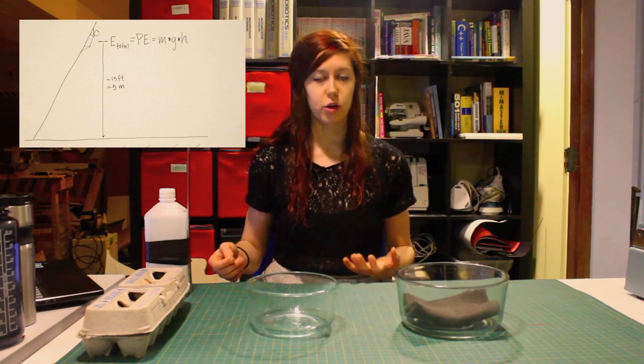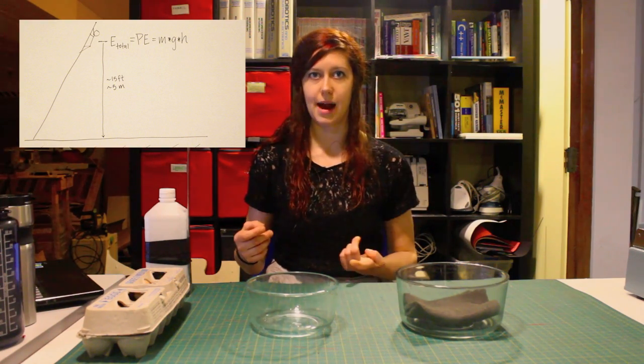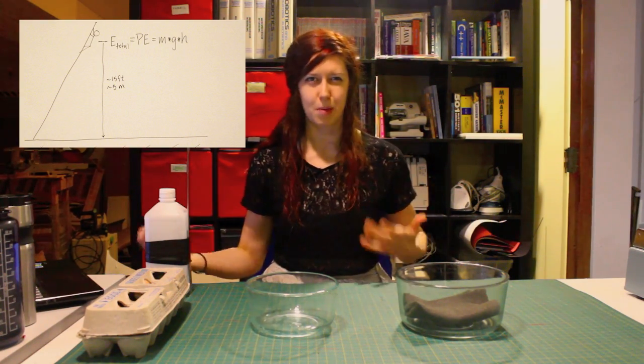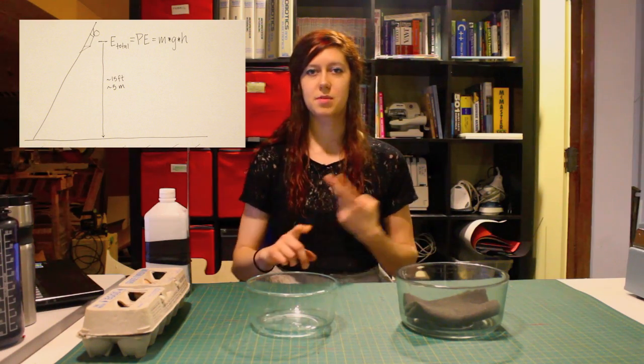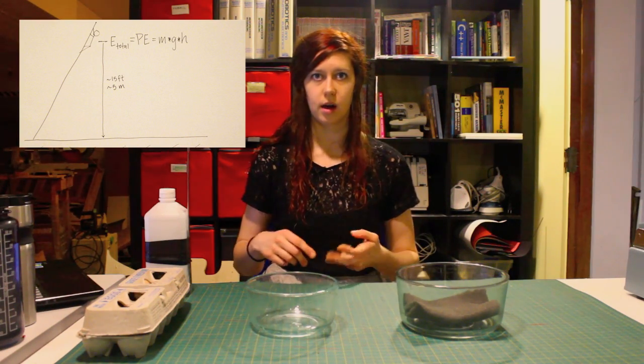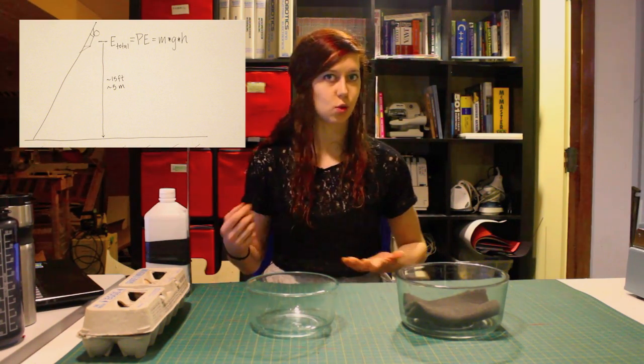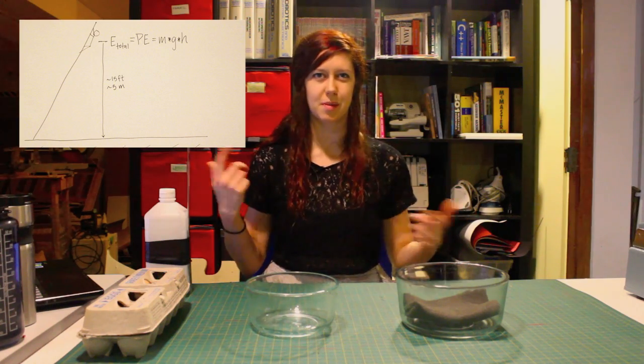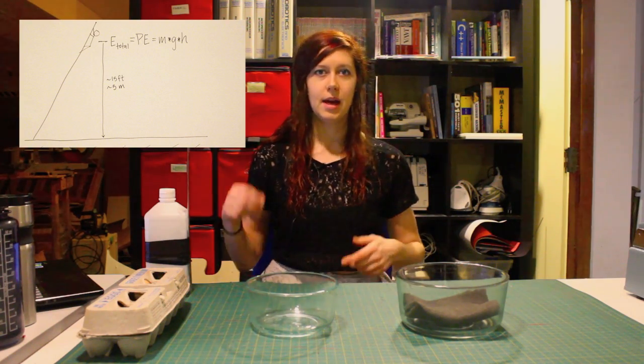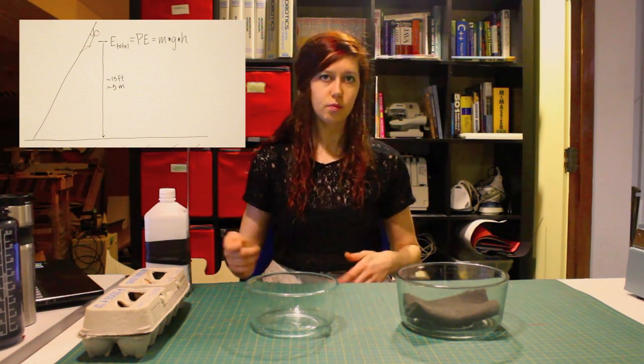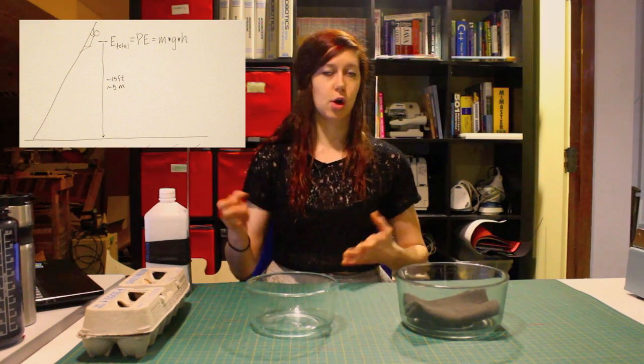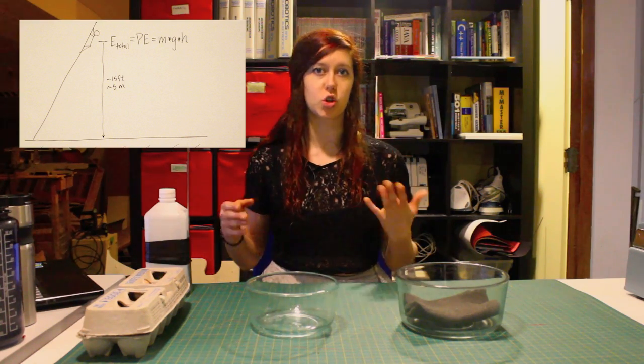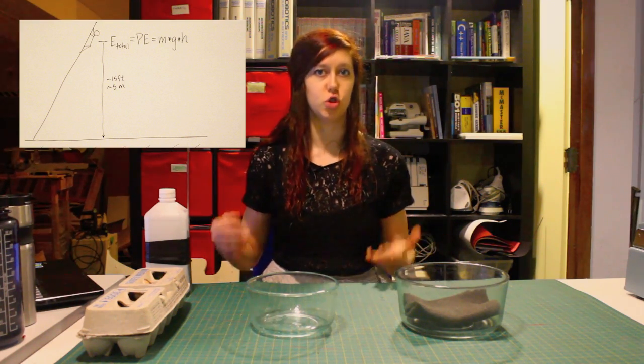So the gravitational potential energy is defined as the mass of the object so that would be me, let's assume I'm about 60 kilograms times the gravitational acceleration, I'm gonna use 10 meters per second squared because I like round numbers to make the calculations easier in my head, and times the height so in this case five meters. So in that instance my total potential energy would be 3,000 joules.